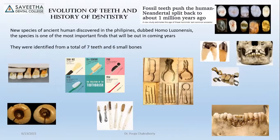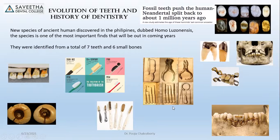The evolution of dentistry can be traced through specimens. Gold was drilled into tooth canals in ancient times. We can trace the evolution of toothbrushes, orthodontic treatments, different types of crowns, dental treatments, fillings, and patterns — all helping to recreate history. A newer species of ancient humans was discovered in the Philippines, dubbed Homo luzonensis, based on patterns of seven teeth and six small bones.